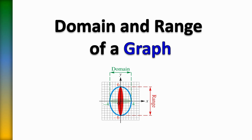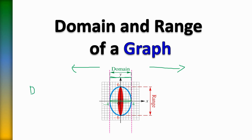When you want to find the domain, the domain is simply how far to the left or how far to the right does this graph extend. I have a graph of a circle, so I want to know how far does this circle extend. As we can see, this circle extends only in this region — it starts right there at negative 4 and it keeps going and stops. So the domain is how far it extends in both directions, starting at negative 4.